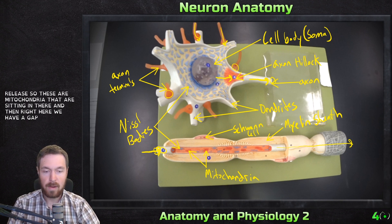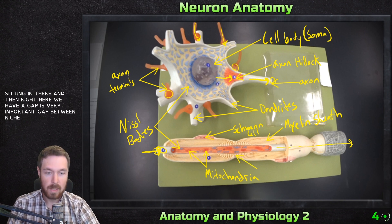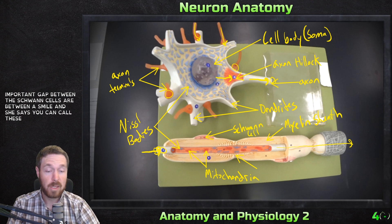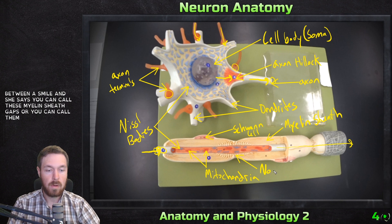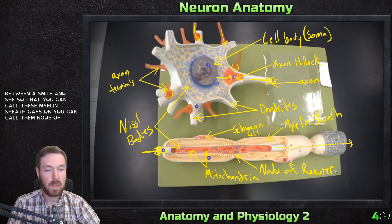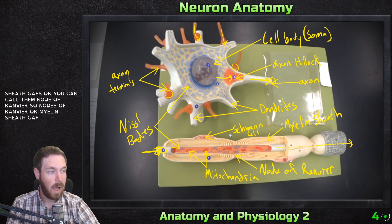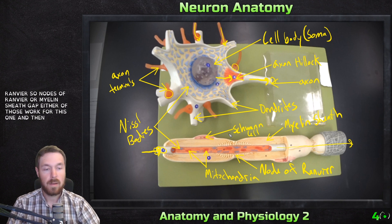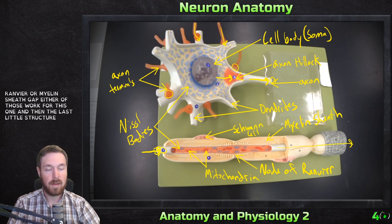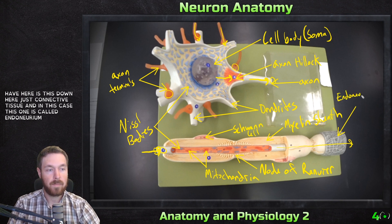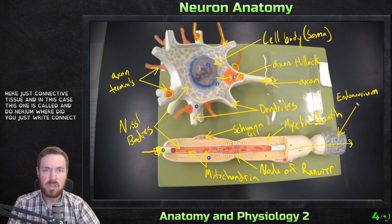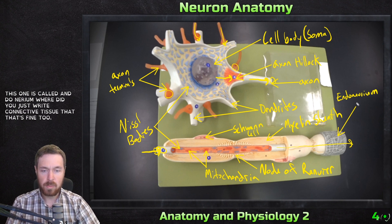Right here we have a very important gap between these Schwann cells, between these myelin sheaths. You can call these myelin sheath gaps, or you can call them nodes of Ranvier — either works. Then the last structure we have here is connective tissue, and in this case it's called endoneurium — or just writing connective tissue there is fine too.